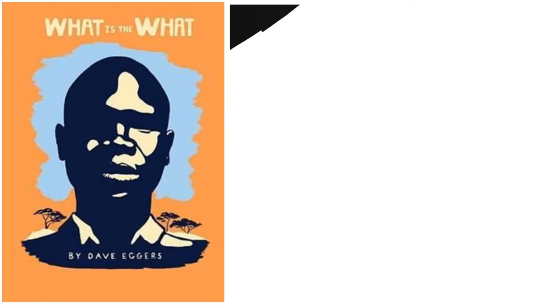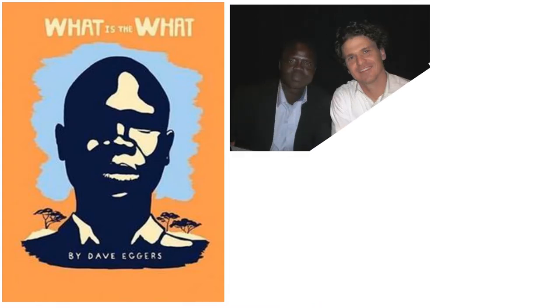Dave Eggers published his book What is the What? The Autobiography of Valentino Acik Deng in 2006. It is based on the story of Valentino Acik Deng, a Sudanese juvenile refugee who came to America as part of the Lost Boys of Sudan program.